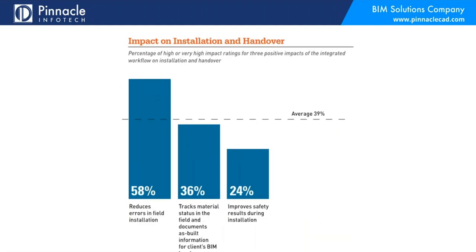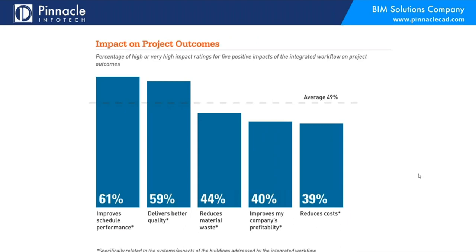In the installation and handover phase, key benefits include reducing errors in field installation — one of the hardest problems to fight — tracking material status, doing as-builts, and improving safety. Looking back at the finished project, people report improved schedule performance, better quality, reduced material waste, improved company profitability, and reduced cost. These are really hard to achieve any other way than through this fundamental change in how we do business — making it all about integrated digital multi-party workflows.